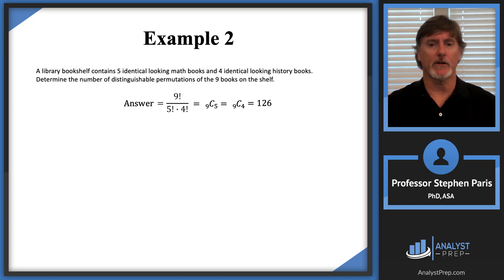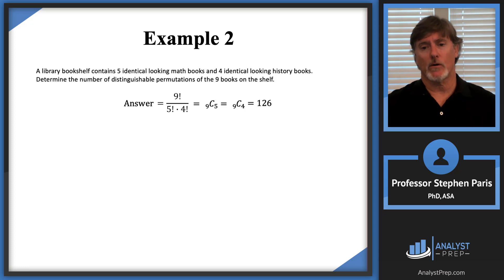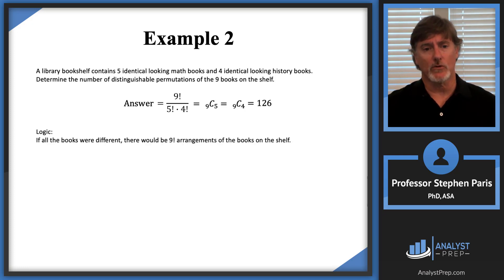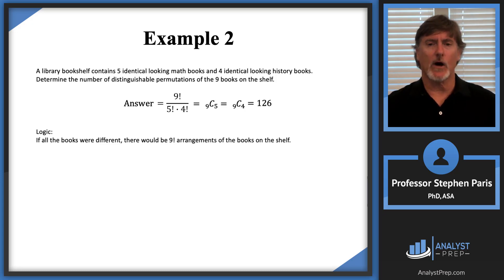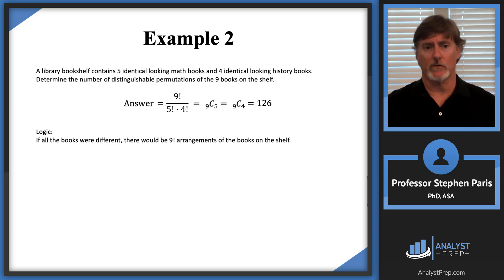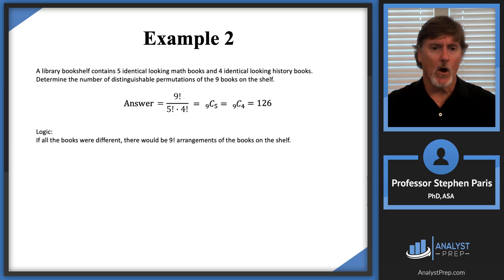Let's look at the logic more closely. If all nine books were different, there would be nine factorial arrangements of the books on the bookshelf, because anytime you swapped books around you'd be able to tell the difference. So we start with nine factorial as the number of arrangements when we can tell all books apart.